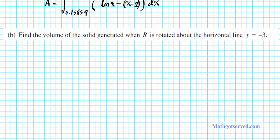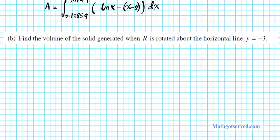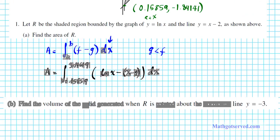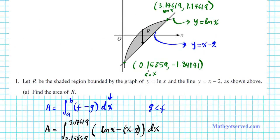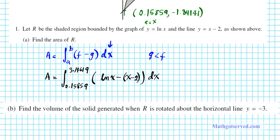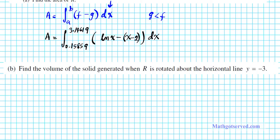For the volume part, find the volume of the solid generated when R is rotated about the horizontal line y equals negative 3. We want to orient our functions relative to where the axis of rotation is. y equals negative 3 is clearly below both of these two functions, so since it's beneath both functions, we're going to be using this formula right here. Always let the formulas guide you — they're really helpful.